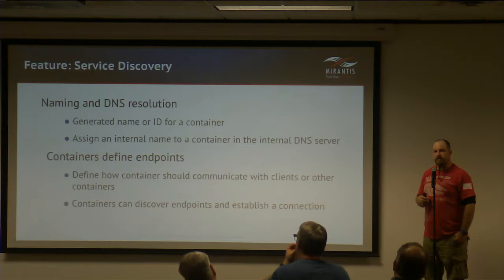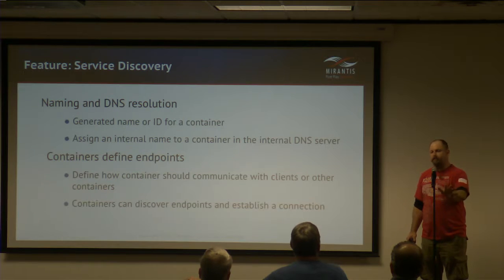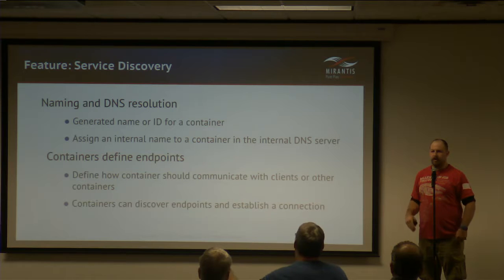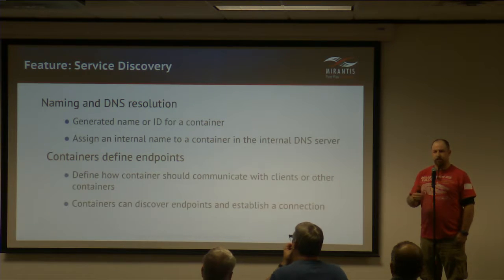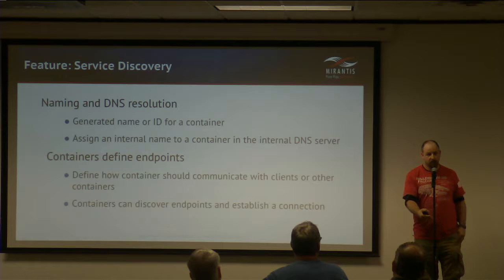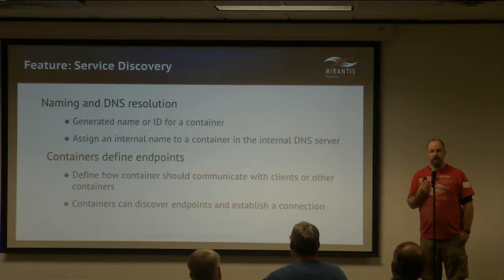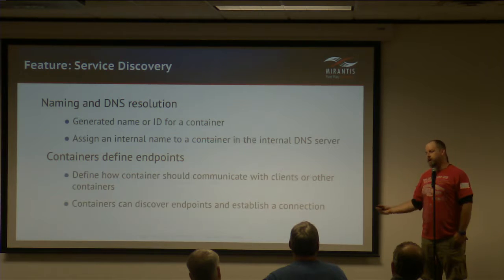Orchestration systems provide service discovery through either unique identifiers generated per container or an interior DNS system, so you can use name-based relationships to locate containers. Depending on which platform you choose — some have one or both methods — finding service endpoints within your cluster becomes straightforward. The management platform defines and maintains a service catalog, so when a web head needs to connect to a load balancer and a database, it handles that mapping even if those components live on very different parts of the cluster.